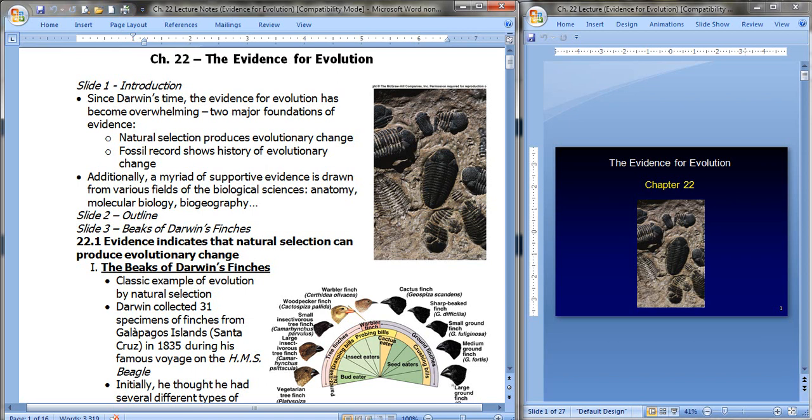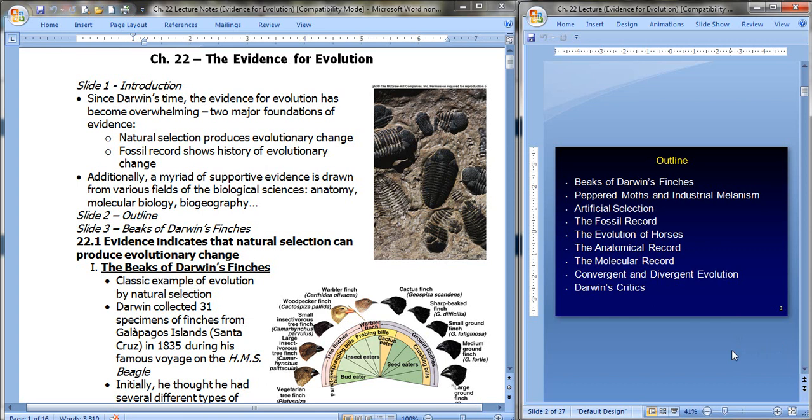So here are the topics we'll talk about. Darwin's finches and their beaks, peppered moths and the idea of industrial melanism, artificial selection, the fossil record, the evolutionary history of horses, very interesting, the anatomical record, the molecular record, convergent and divergent evolution, and, of course, critics of Darwin.